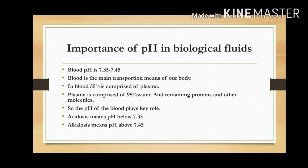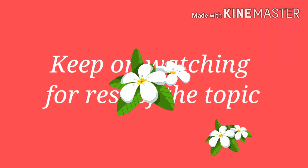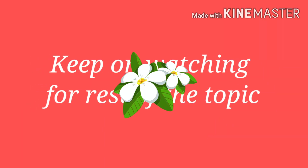Whenever the pH decreases below 7.35, that condition is known as acidosis. Whenever the pH of blood increases above 7.45, that condition is called alkalosis. The blood pH is always maintained by buffer systems, such as the respiratory and metabolic buffer systems.